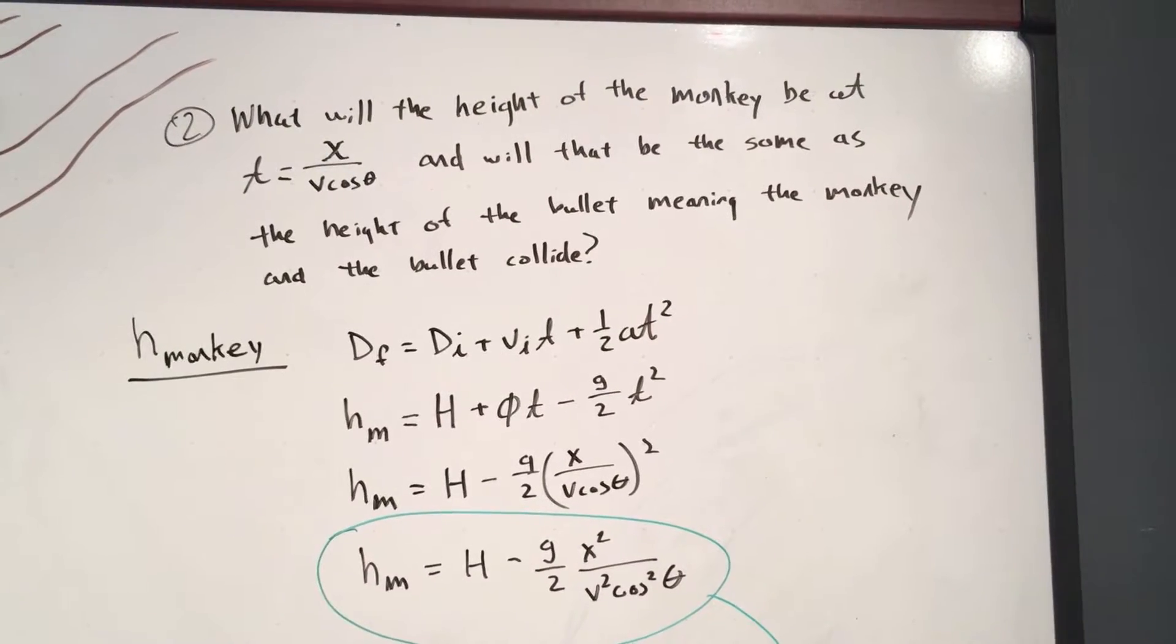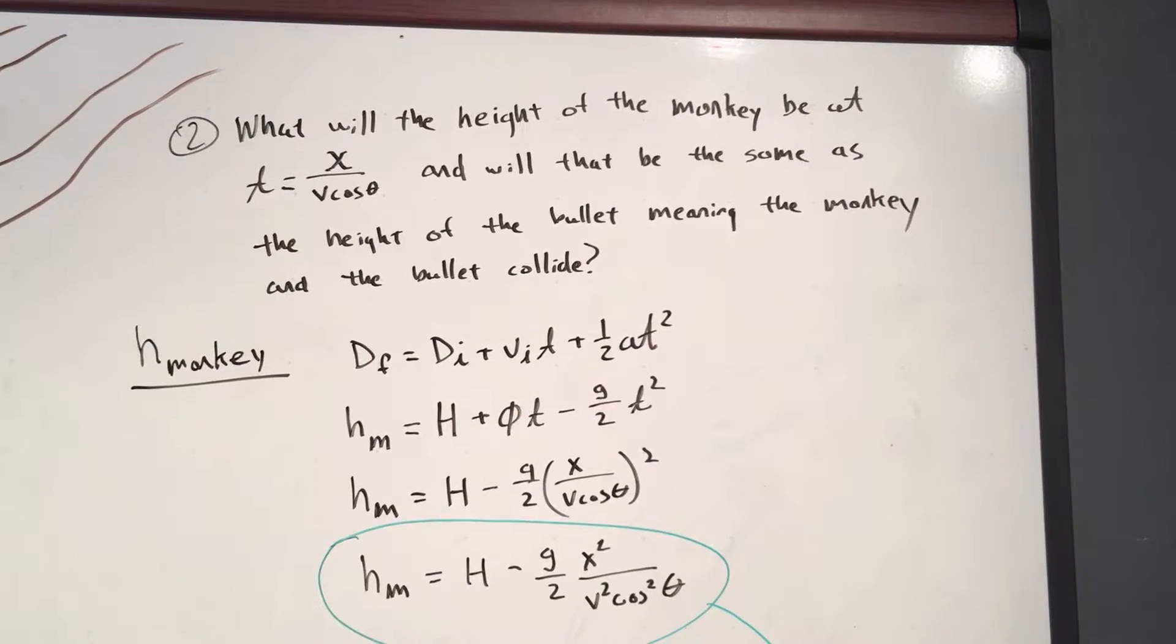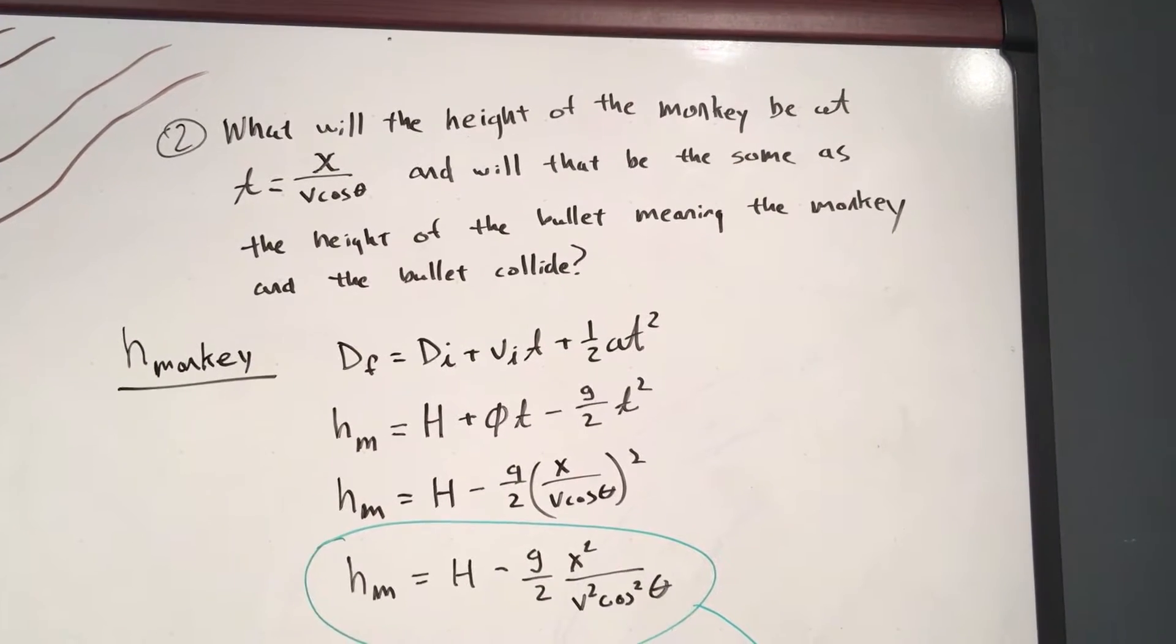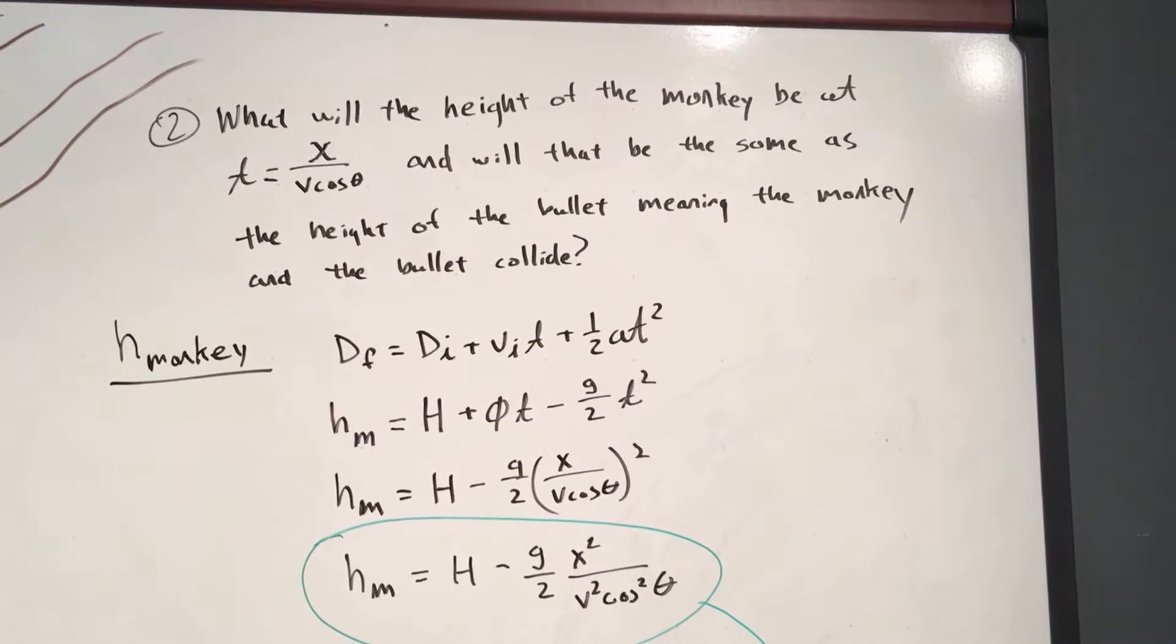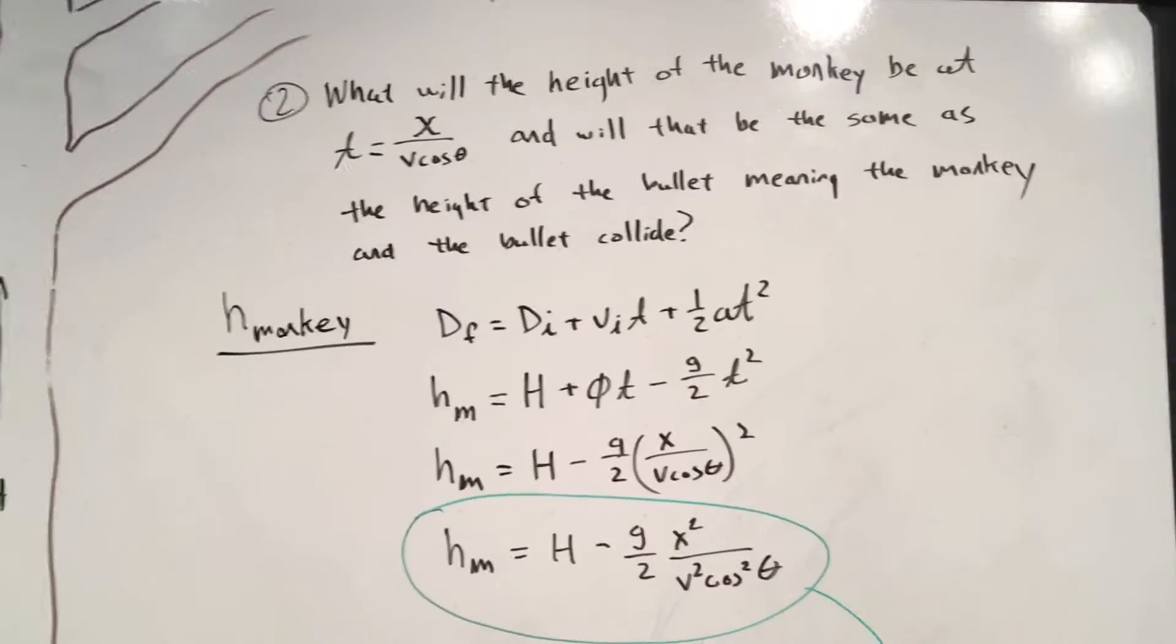So the next question is, what will the height of the monkey be at time equals X over V cosine theta? And will that be the same as the height of the bullet, meaning the monkey and the bullet collide? So the height of the monkey, use your distance formula again.